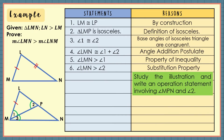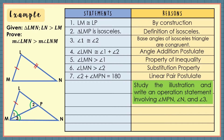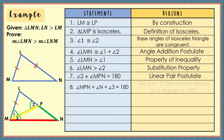For number 7, study the illustration and write an operation statement involving angle MPN and angle 2. Angle MPN and angle 2 form a linear pair, and the angles of a linear pair add up to 180 degrees. So, angle 2 plus angle MPN is equal to 180 degrees, by the linear pair postulate. For statement number 8, angle MPN, angle N, and angle 3 are the 3 interior angles of triangle MPN. So, angle MPN plus angle N plus angle 3 is equal to 180 degrees, because the sum of the interior angles of a triangle is 180 degrees.